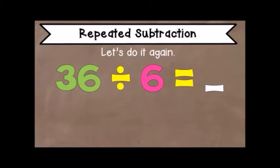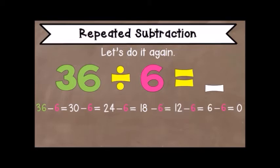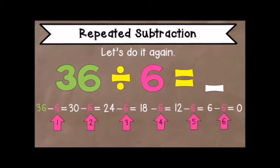Let's do it again: 36 divided by 6. We start with the dividend 36 and subtract the divisor 6 until we reach 0. 36 minus 6 is 30; minus 6 is 24; minus 6 is 18; minus 6 is 12; minus 6 is 6; minus 6 is 0. Now count how many times we subtracted: 1, 2, 3, 4, 5, 6. We subtracted 6 times, so 36 divided by 6 is equal to 6.